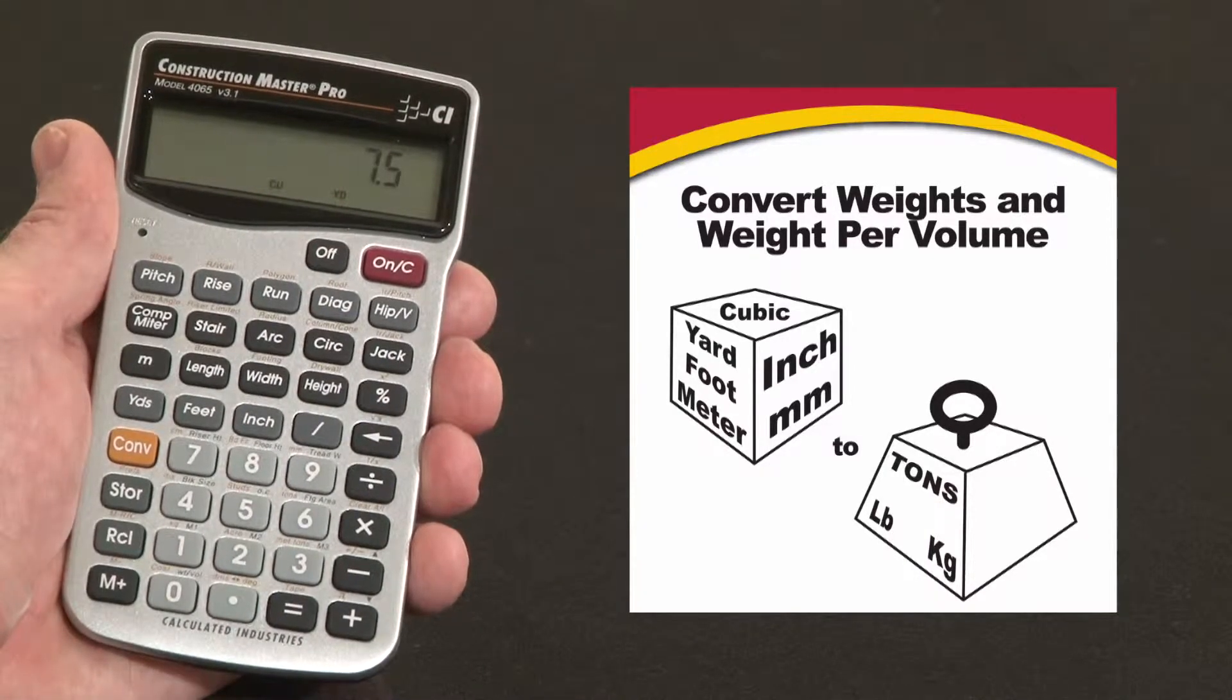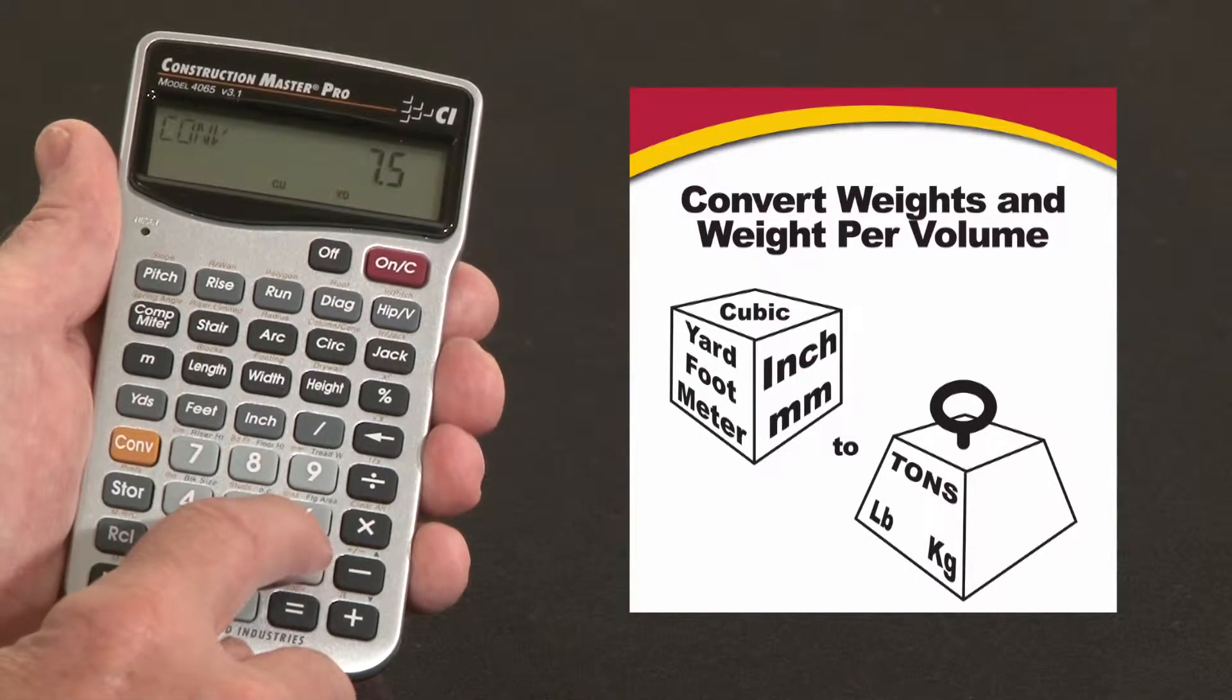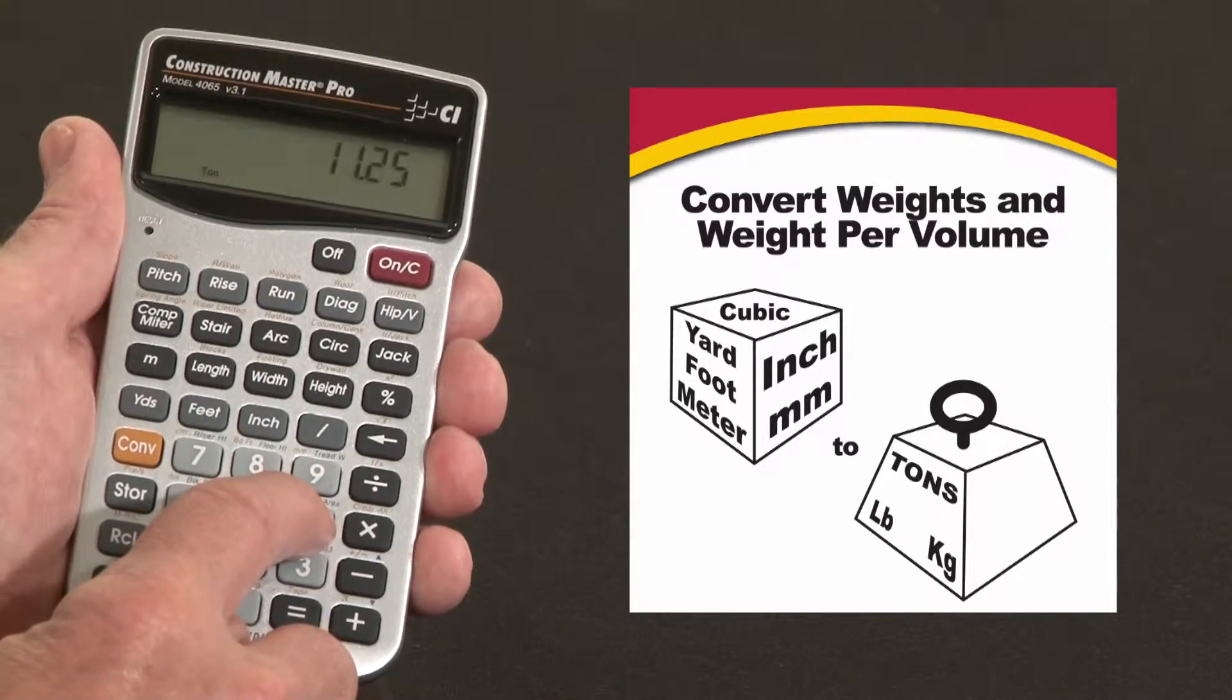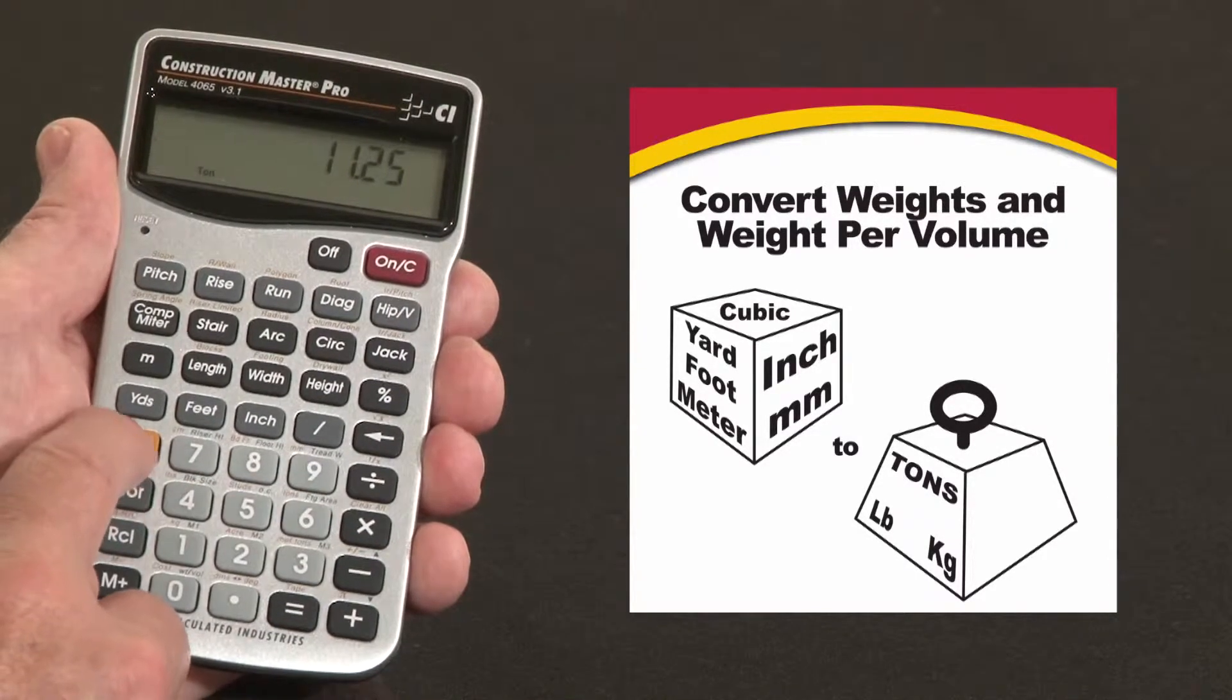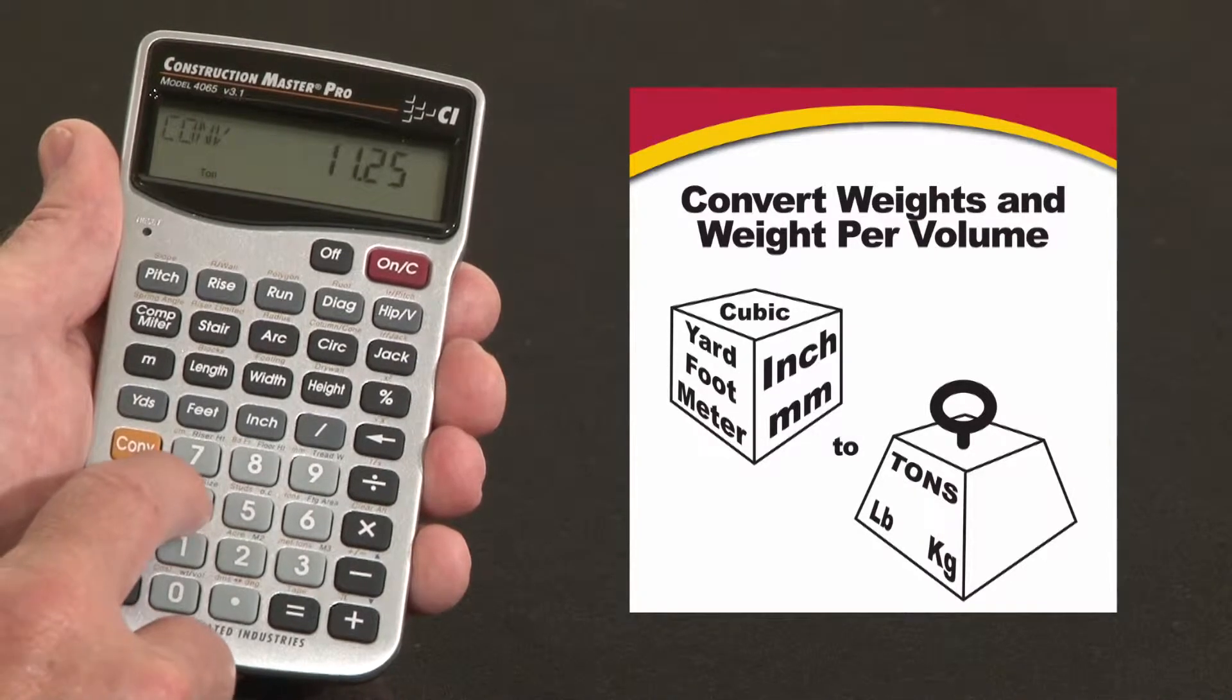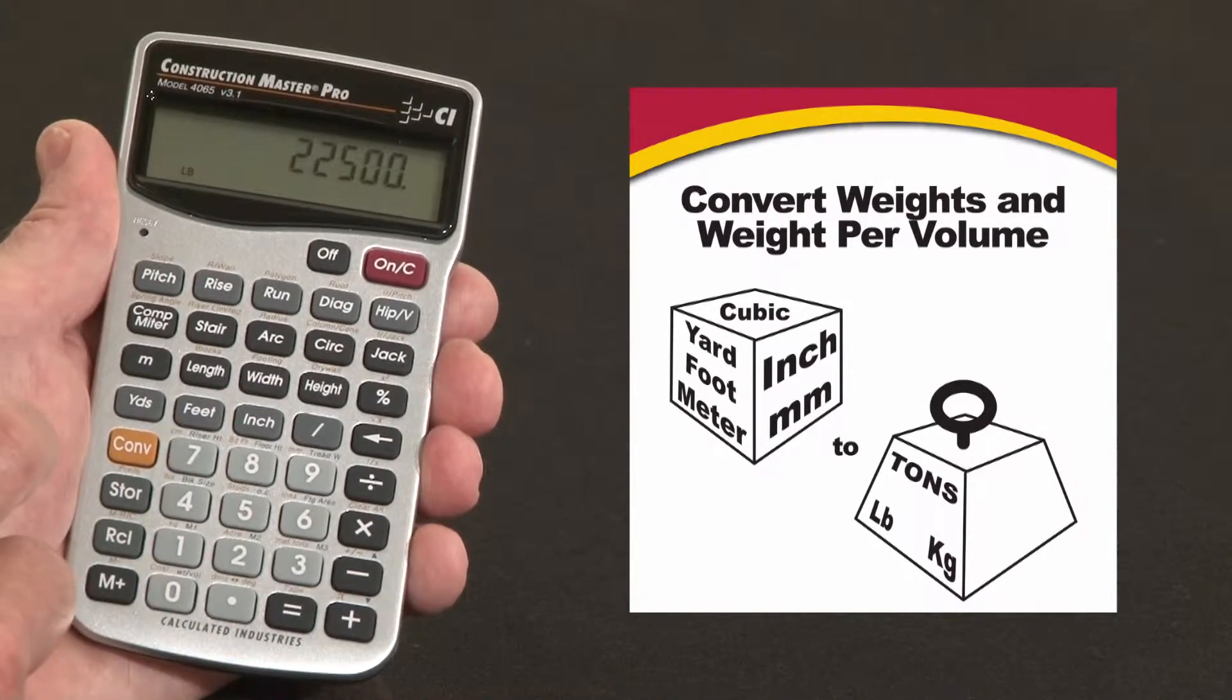Now we want to convert that to tons. So convert, over the six key it says tons. Eleven point two five tons. I can also convert that to pounds if I like over the four key. Twenty-two thousand five hundred pounds.